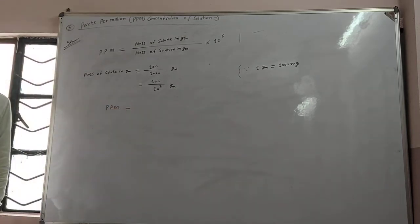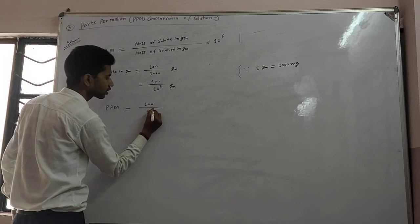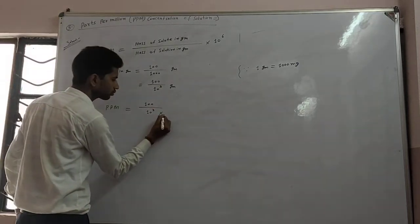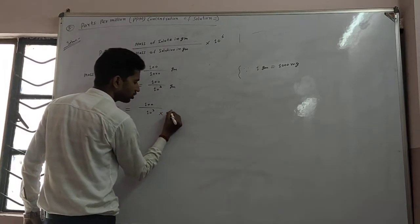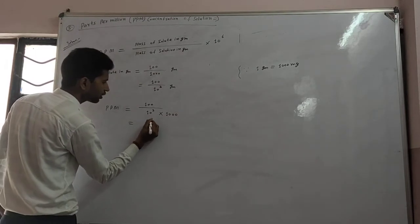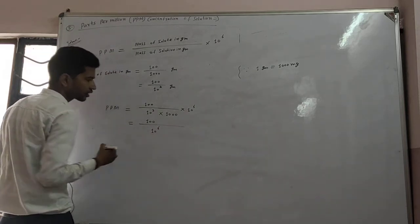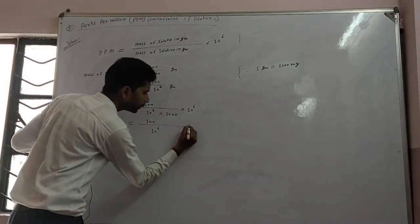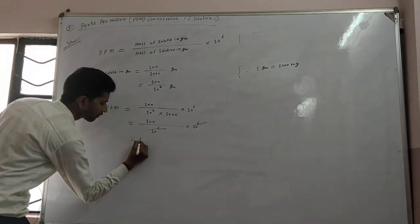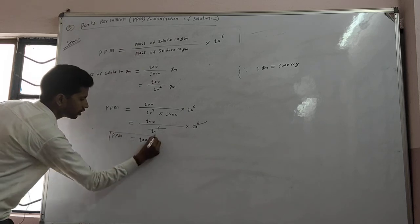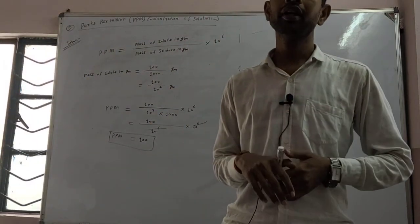Now, PPM concentration is equal to mass of the solute in gram, which is 100 upon 10 to the power 3, upon mass of the solution in gram, multiplied by 10 to the power 6. Hence, the PPM concentration of the solution will be 100 PPM.